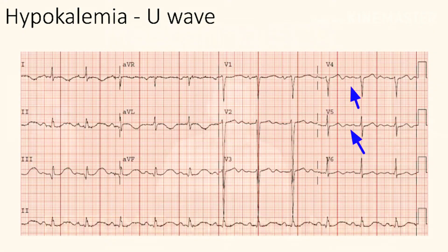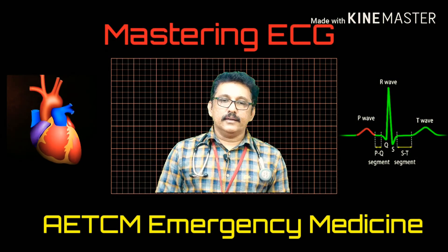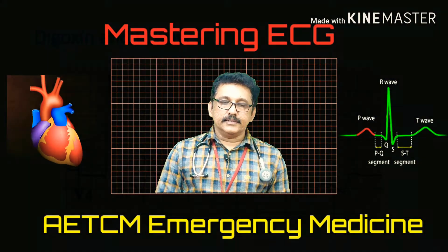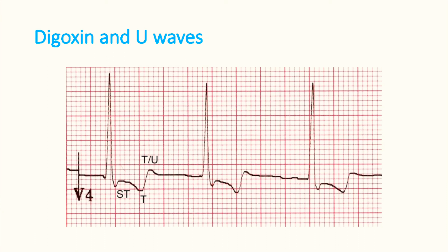In patients who are on digoxin, you can see ST segment depression with T-wave inversion — this is called the reverse tick sign of digoxin effect. After the T-wave inversion, you can see a positive deflection, which is actually the U-wave. So in patients on digoxin, you get ST depression and T-wave inversion with a U-wave.